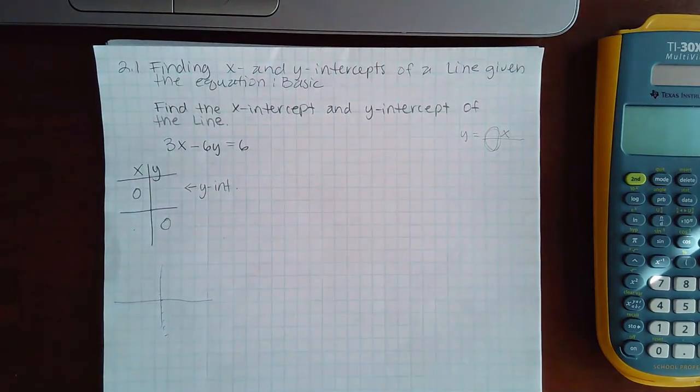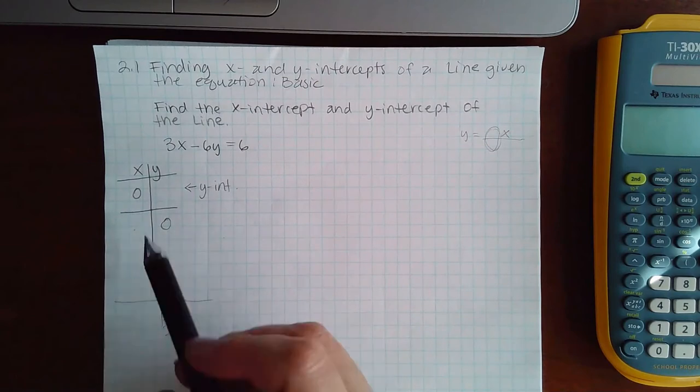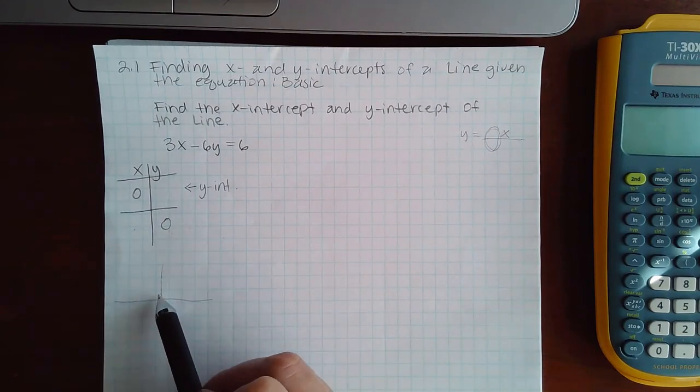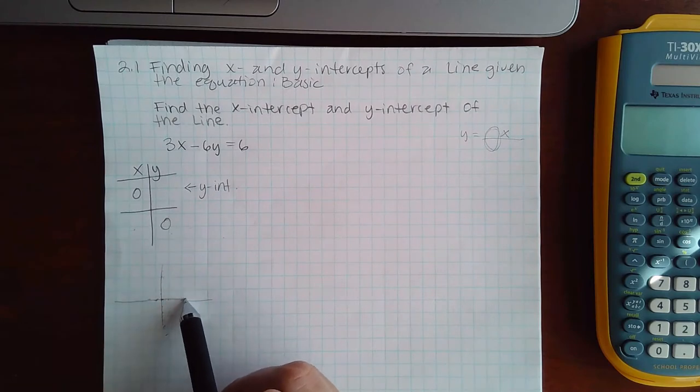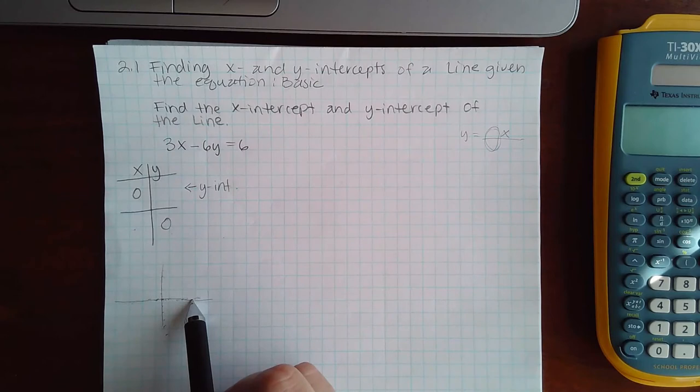And similarly, if my y value is zero, that means it cannot go up or down. My point would either go to the left or go to the right, which means that point would be the x-intercept.